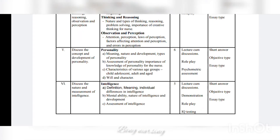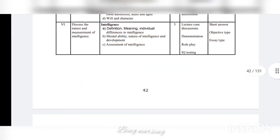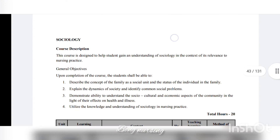Unit four covers personality: meaning, nature, and assessment. Unit five covers intelligence: meaning and types of intelligence.